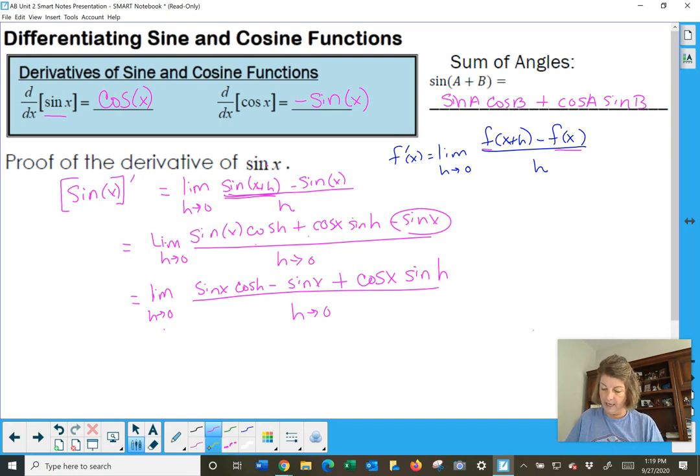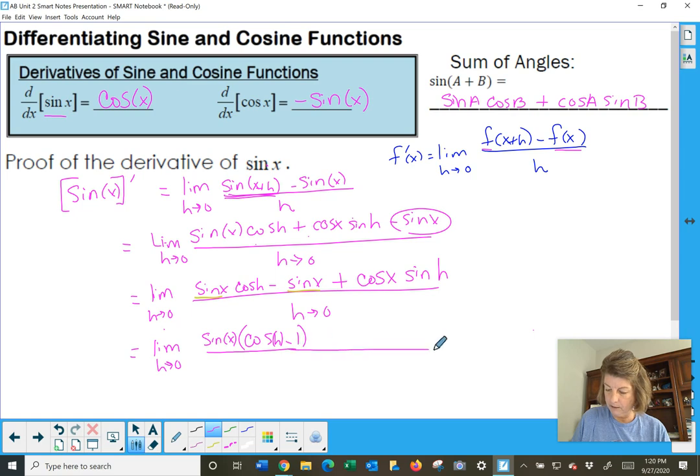Next, well, they have a sine in common, don't they? I got sine and sine. Let's factor a sine x out of there. So I'm going to get the limit as h goes to 0, factor sine of x forward. That'll leave me cosine h minus 1, all over h. And then we're going to go plus cosine x sine of h over h.